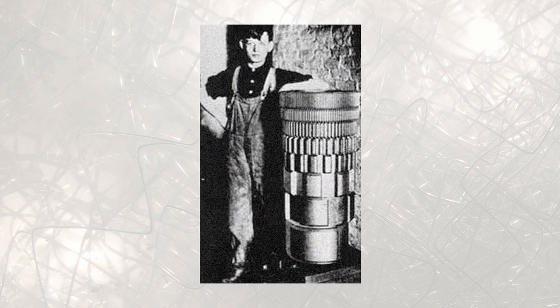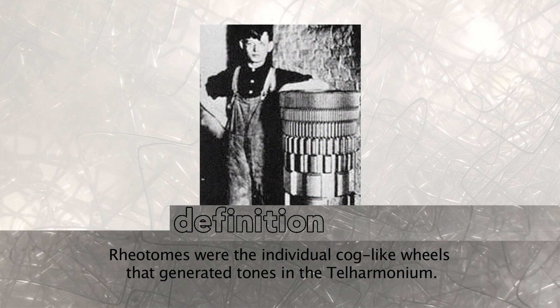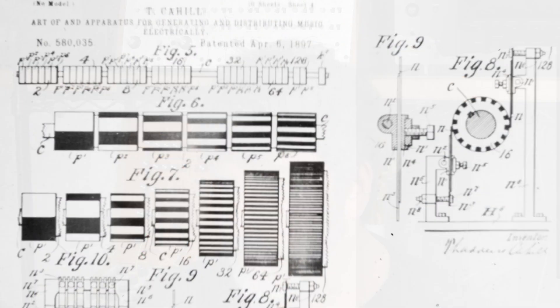What Cahill did to generate those increasing frequencies and decreasing amplitudes was create what's called a rheotome — an axle with cogs on it. The cogs corresponded to those proportions: the biggest cogs were the loudest, and the teeth represented individual iterations of the wave shape. It wasn't exactly a sine wave — actually closer to a square wave, though shaped differently. The rheotome represented one tone, with multiple cogs representing the frequencies present in the harmonic series. Spin it at a constant speed and you generate tones.